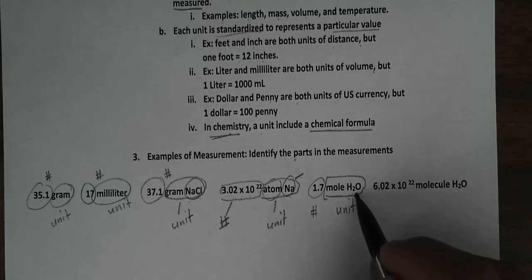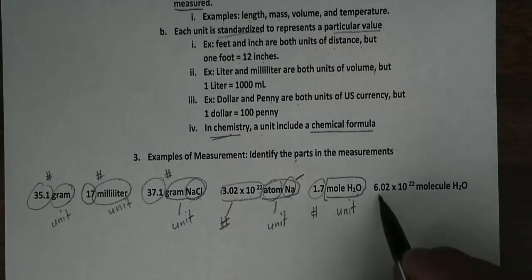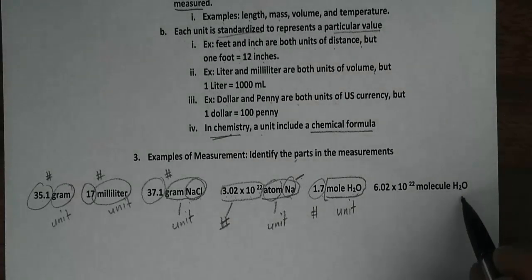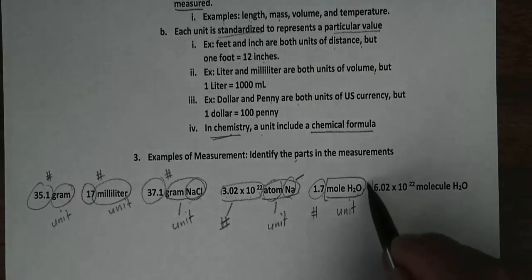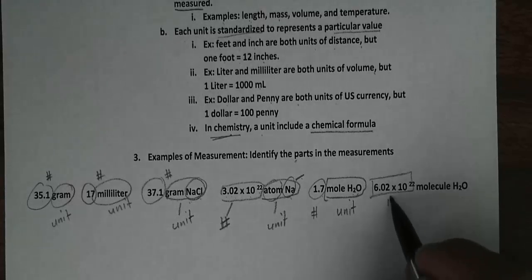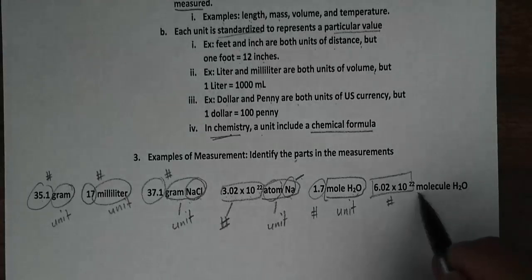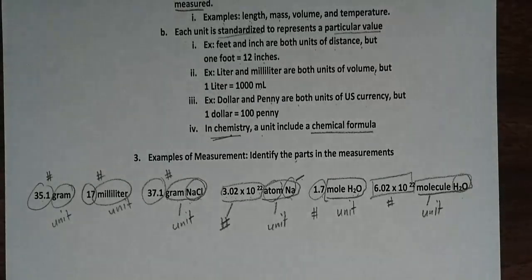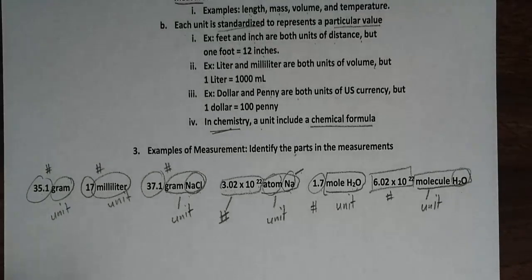Then we have 6.02 times 10 to the 22nd molecules of H2O. And this is your number. And this is your unit, which includes a chemical formula, H2O, which is water.